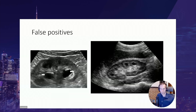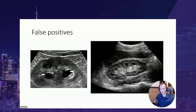Some renal conditions on ultrasound can mimic hydronephrosis. On the left, medullary cysts — which are less common than cortical cysts — could mimic hydronephrosis, but the key difference is that those cavities do not join together in the center of the kidney. On the right, prominent renal pyramids can also mimic hydronephrosis, but again these structures do not join in the middle. That right image actually represents nephrocalcinosis, where the pyramids become calcified with chronic disease.